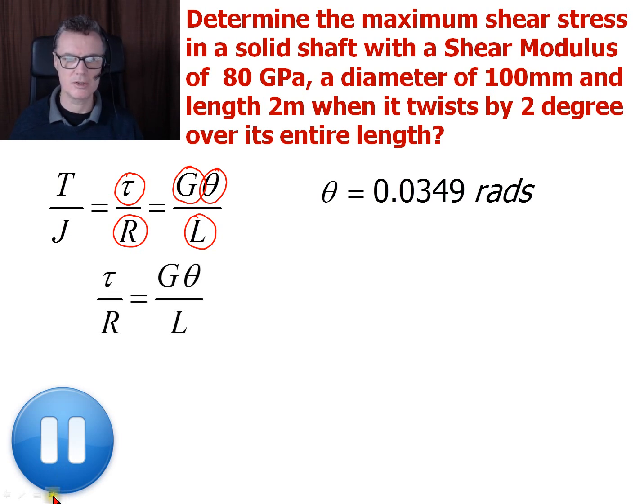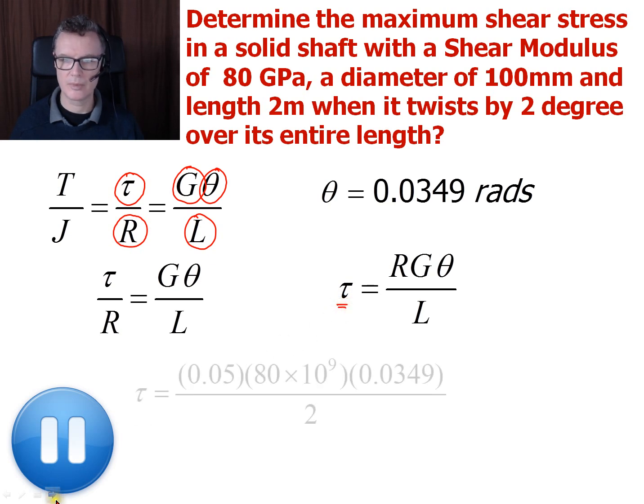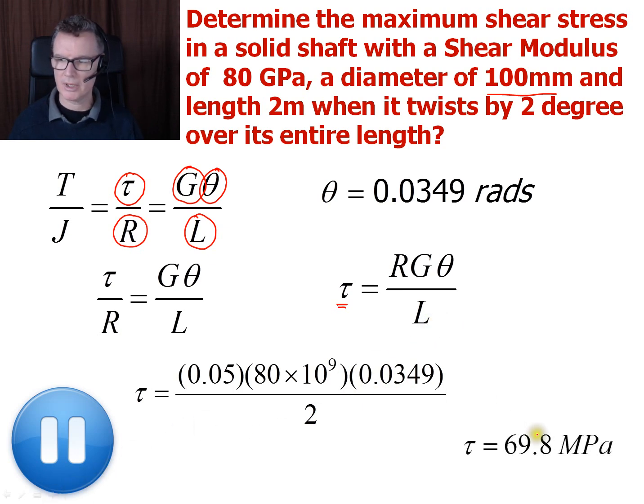And you should have enough information there to rearrange that equation to find what the maximum amount of shear stress this shaft can take. Okay, for those of you that want to see the answer, we are going to just look at these two columns, the Torsion equation. We'll rearrange it so that the R comes over to the right hand side, and we've just got our shear term by itself. And now we can plug in our numbers. So the 100 millimetres becomes 50 millimetres in terms of radius, which becomes 0.05 in terms of metres. So I'm using SI units here. I've got 80 times 10 to the 9 for my pascals. That's my angle of twist there. And my length is 2 metres. So that should give me 69.8 megapascals.